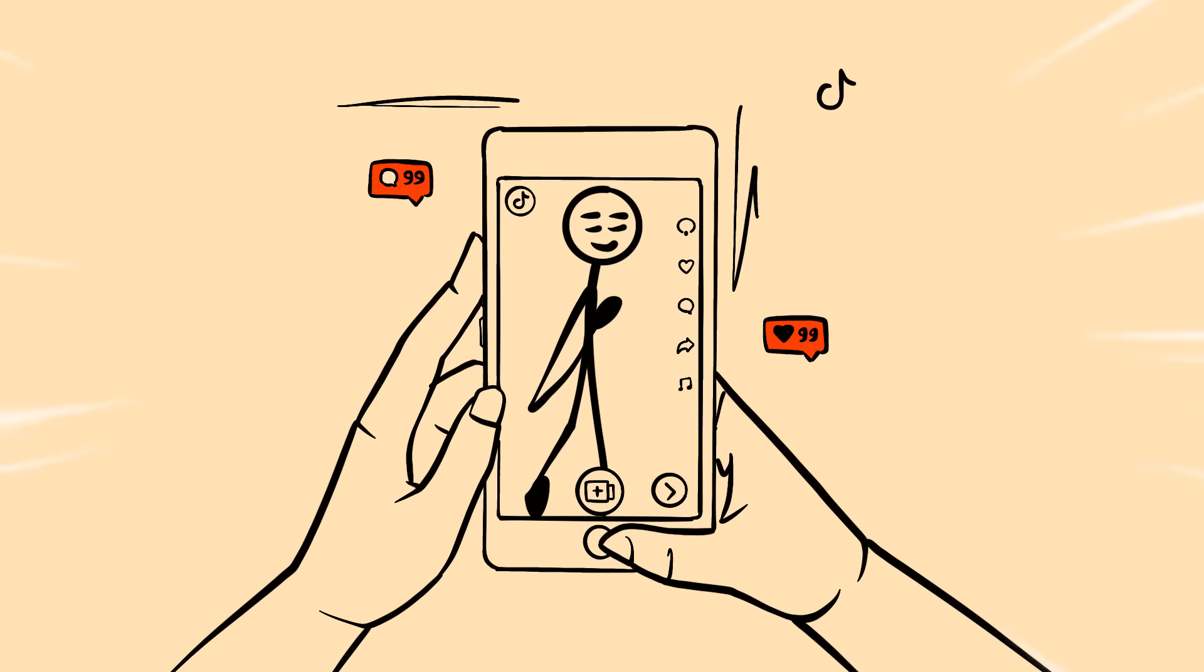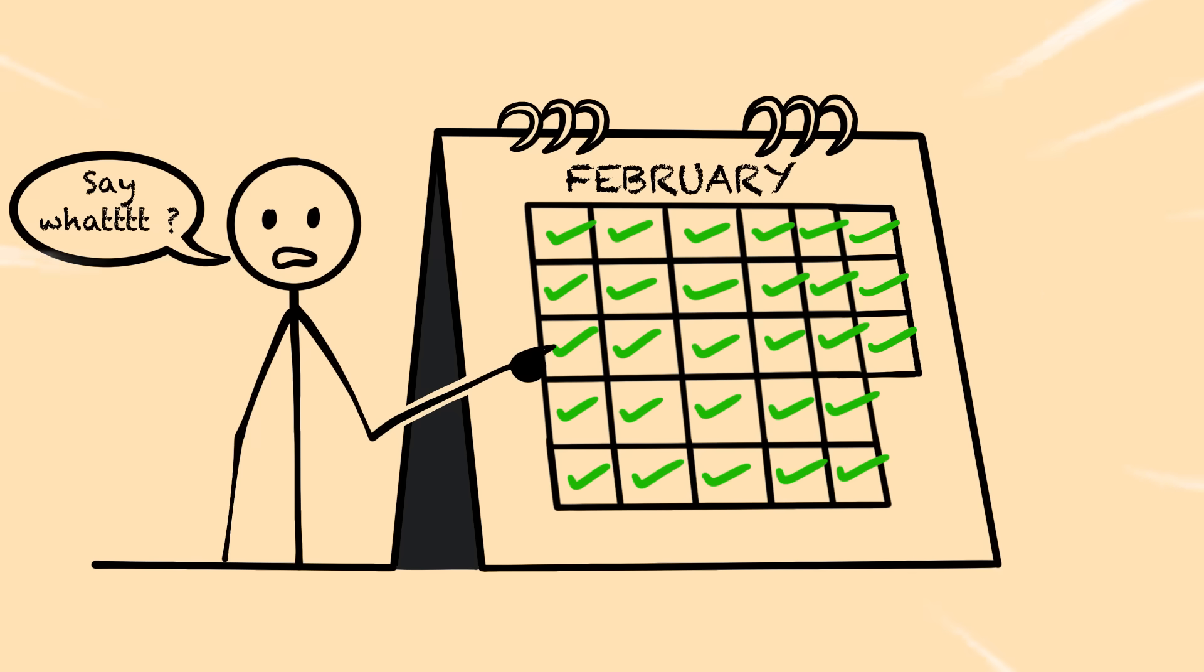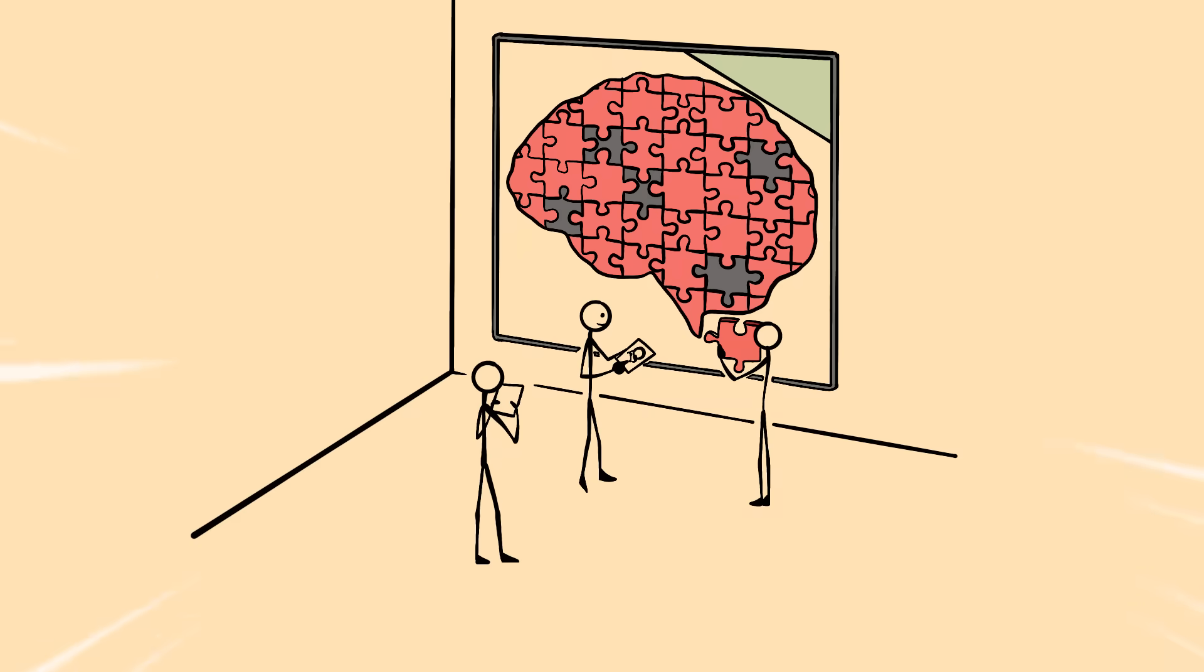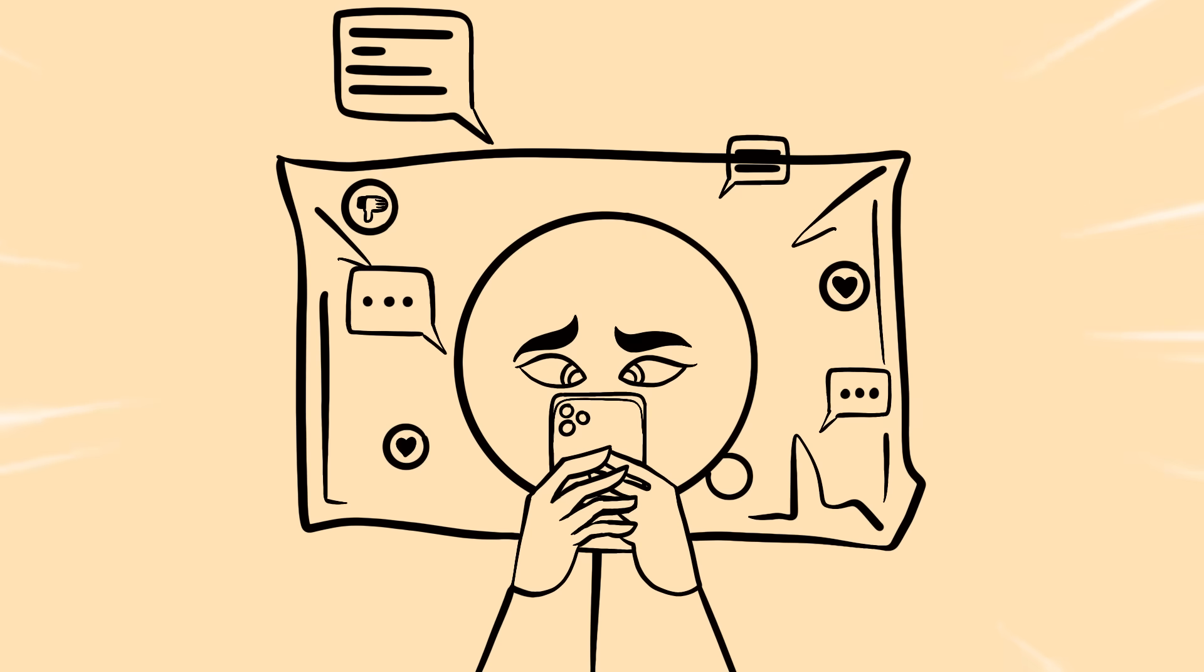What if I told you the three hours you spent on your phone yesterday actually took longer than the entire month of February? I know that sounds impossible, but neuroscience just discovered why your brain processes phone time differently than real time.